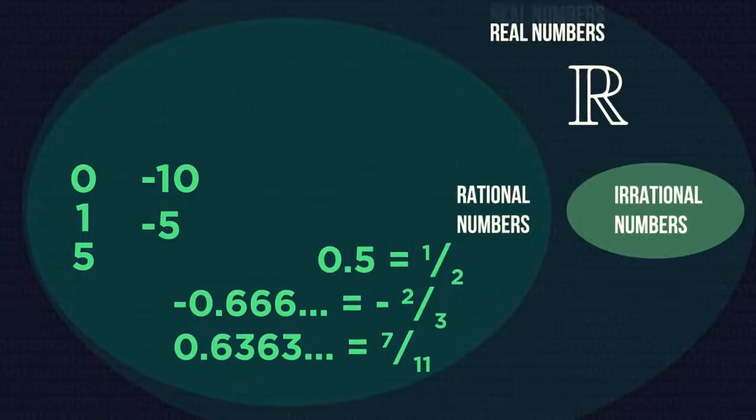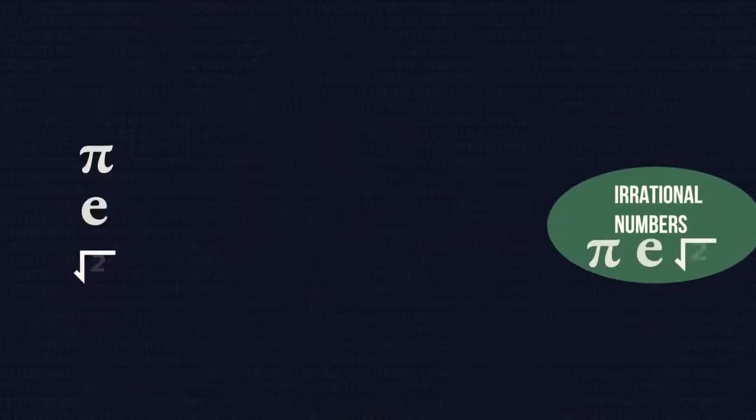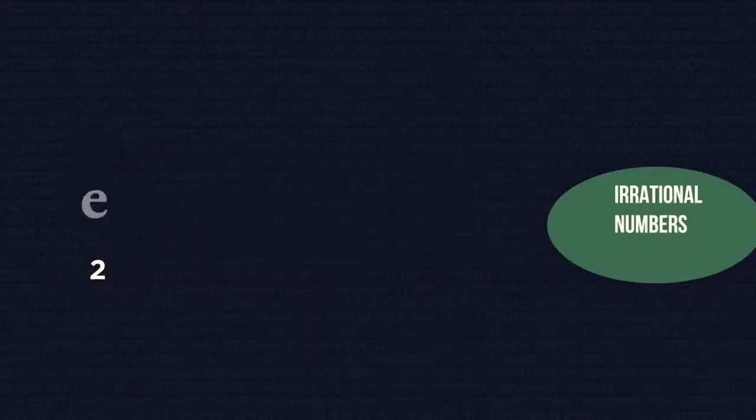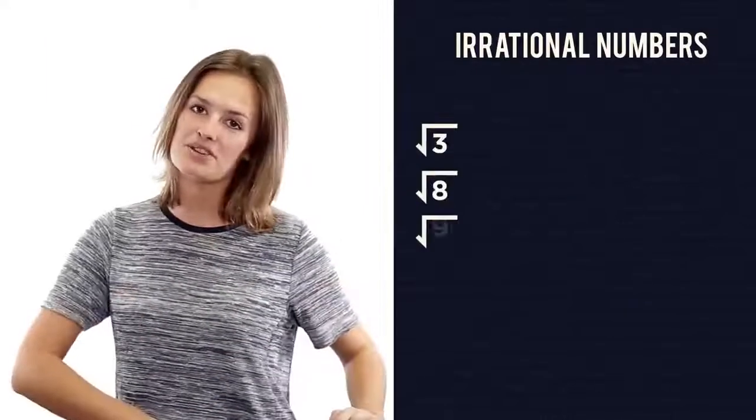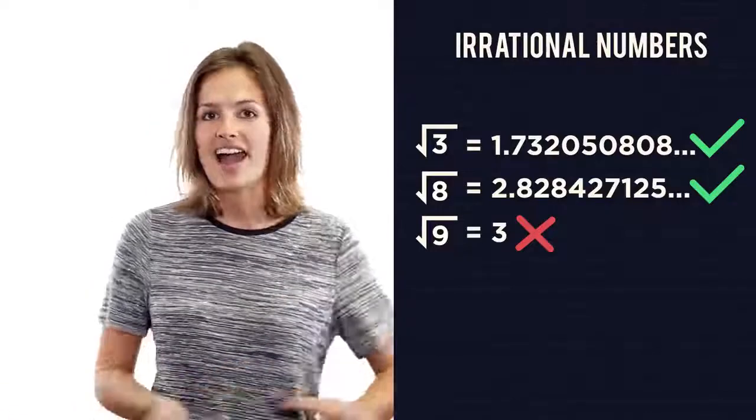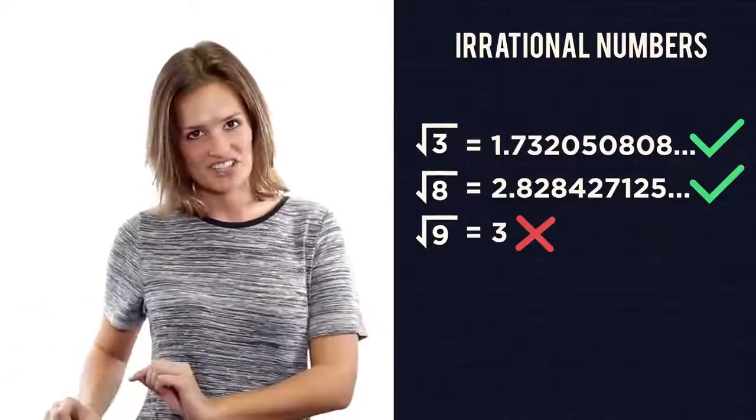Decimals that do not repeat are irrational. Some well-known examples are pi, e, and square root 2. So, many square roots and cube roots are irrational. If the decimal places go on forever without repeating, then they are irrational.